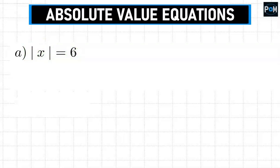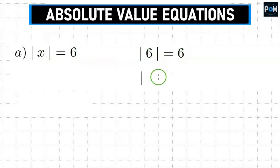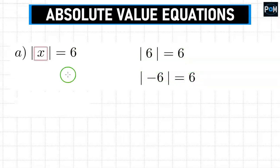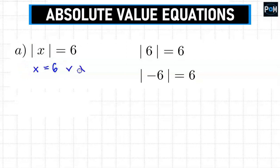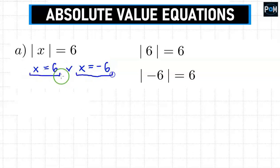If we think for a moment, there are two such cases. The absolute value of 6 is equal to 6, and in the second case, the absolute value of negative 6 is also 6. This means that x must equal 6, or the second option, x might also equal negative 6. These are our two solutions for this example.